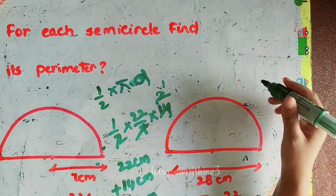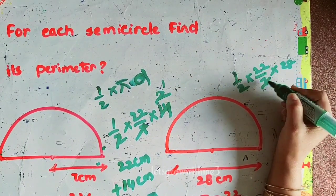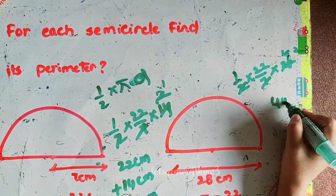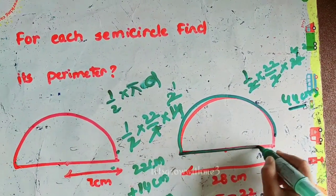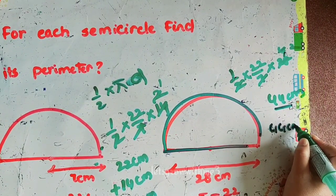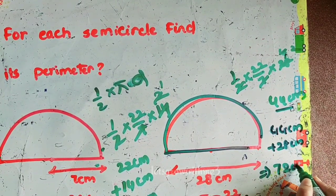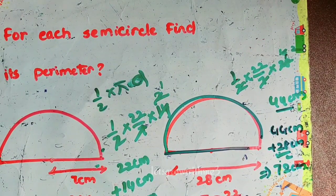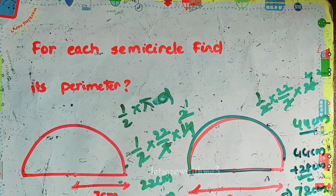For the second semicircle, curved part = (1/2) times 22/7 times d, where d = 28 centimeters. Taking common factors: 7 into 28 is 4, then (1/2) times 22 times 4 is 44 centimeters. Adding the diameter: 44 + 28 = 72 centimeters. So the perimeters of the two semicircles are 36 centimeters and 72 centimeters respectively.